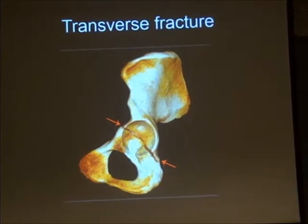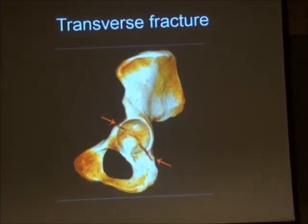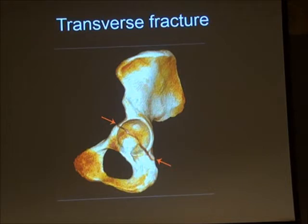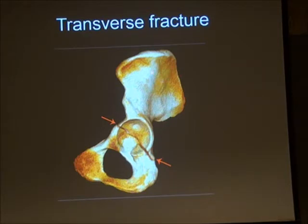The transverse fracture — the fracture line divides the hemi-pelvis into two: a superior part with part of the acetabulum and the dome, and an inferior part, which is the ischiopubic segment. That segment is called the ischiopubic segment, and the intact bit is attached to the rest of the hemi-pelvis — the ilium and the superior part of the acetabulum.